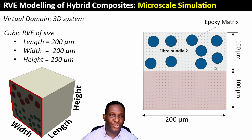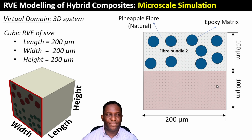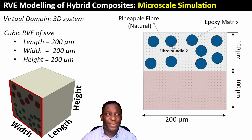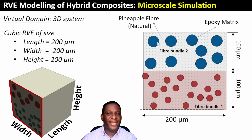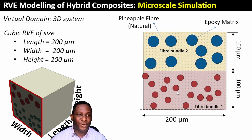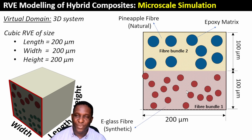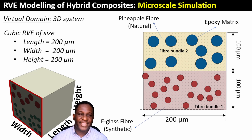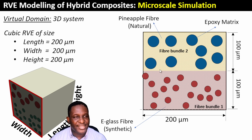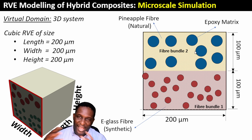At the top there is a fiber bundle and at the base there is also an epoxy bundle. The fiber bundle at the top is a natural fiber system made of pineapple fiber, and the bottom layer is made of an E-glass system. The plan is to create these two layers, combine them together, and create the representative volume element in three dimensions.